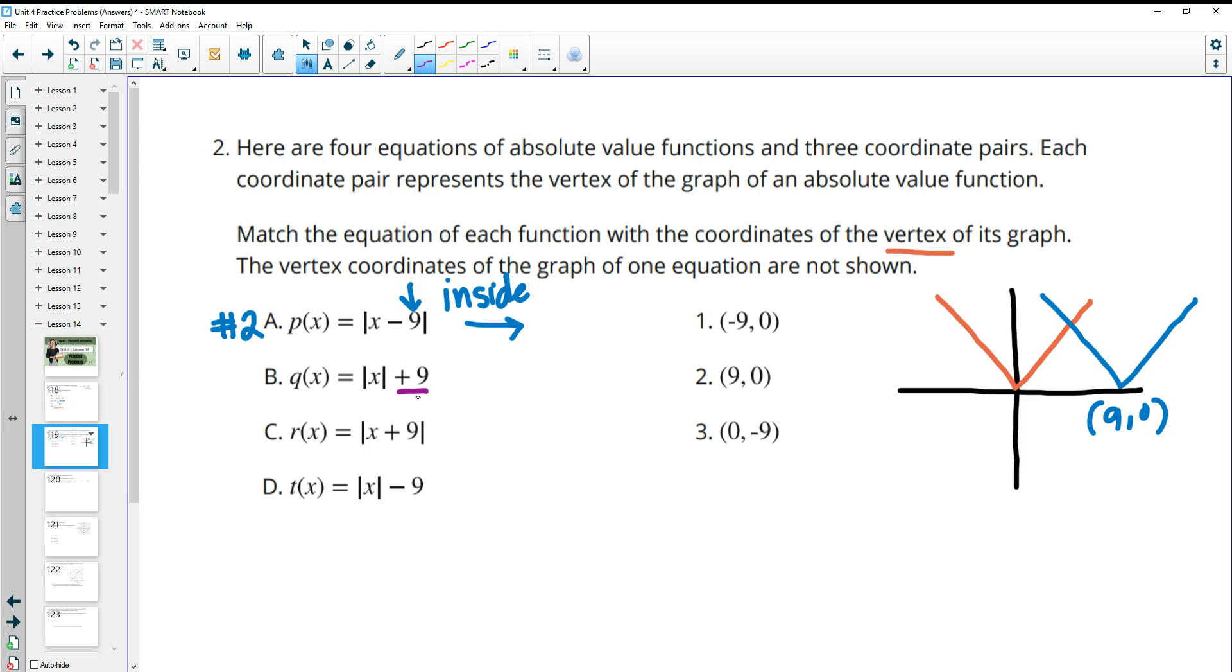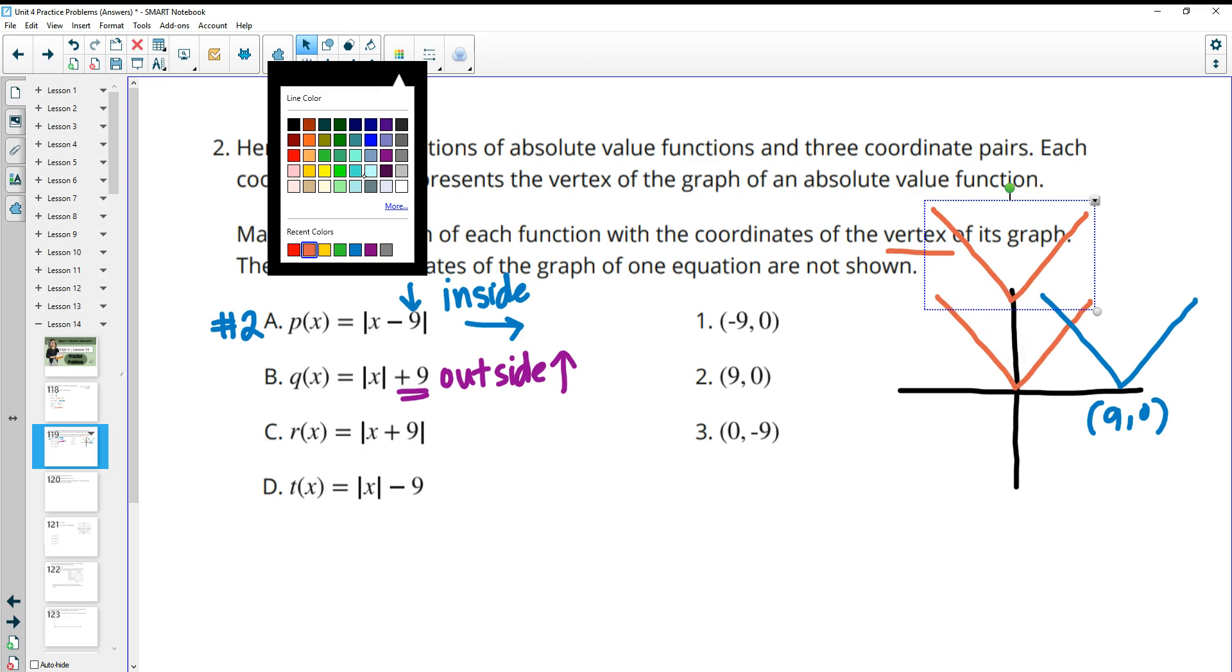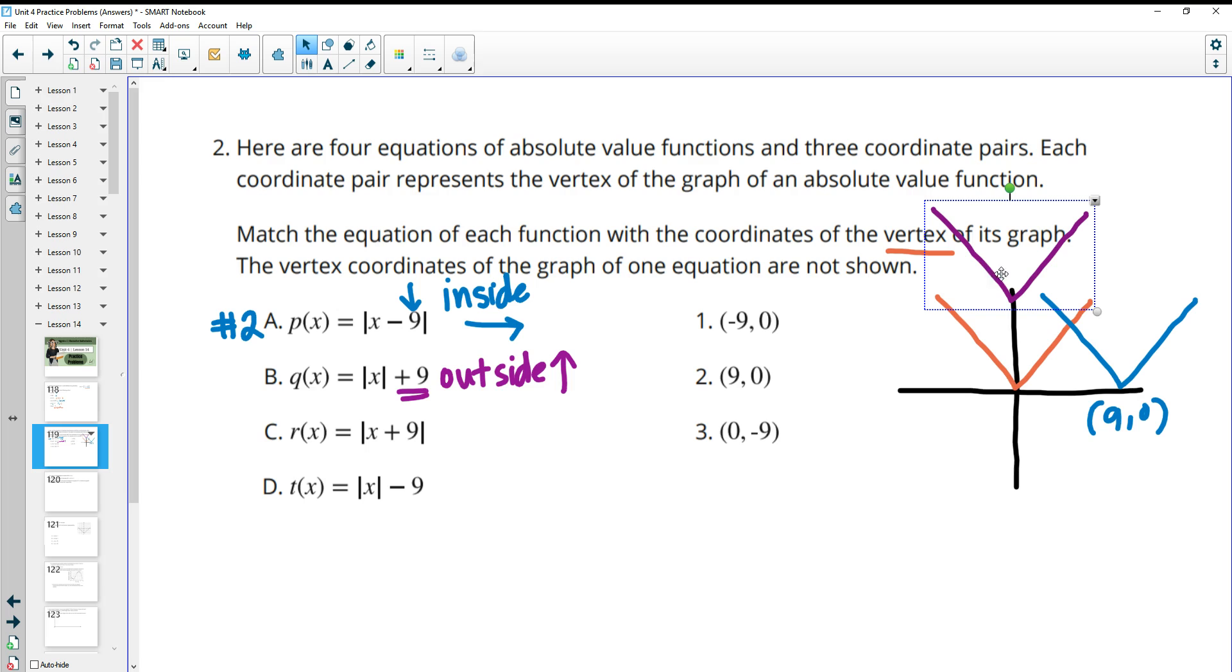Part B, when it's on the outside like this, it moves it up or down, and it does it exactly what it looks like. So in here, it looks like it's a negative 9, but it's moving it to the right, because on the inside, it kind of does the opposite. On the outside, it does exactly what you think. So this plus 9 is actually going to move this parent function up 9 units. And so that would mean that the vertex here is at the point 0, 9. And 0, 9 is not one of our options. So this one doesn't have anything.